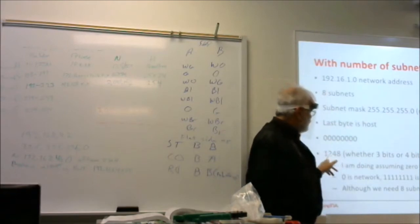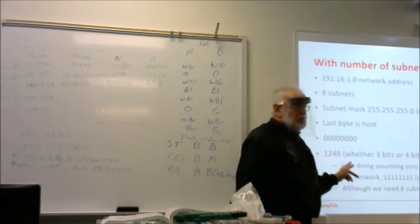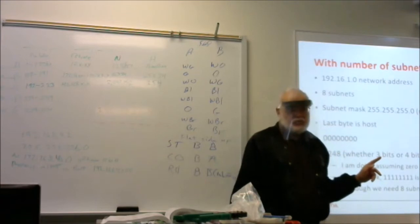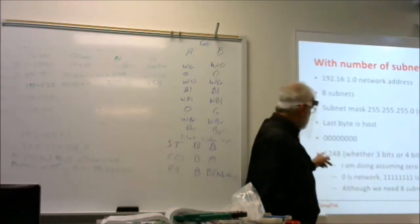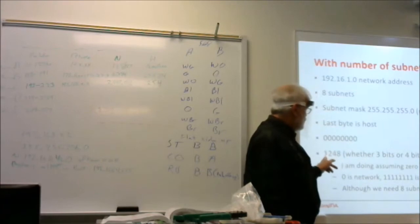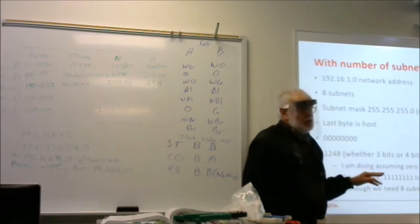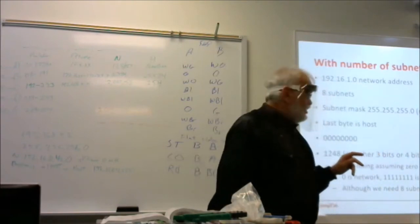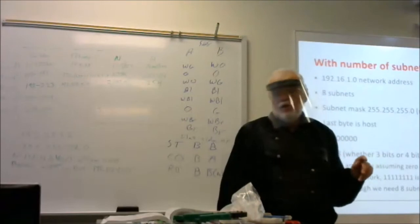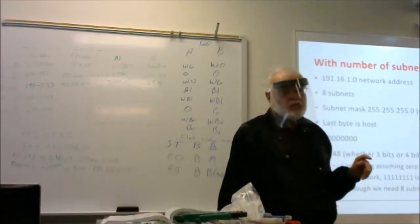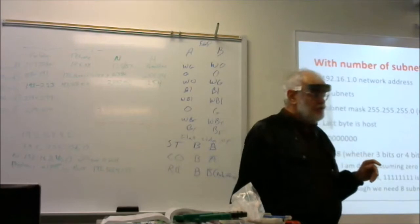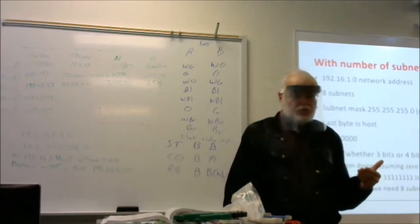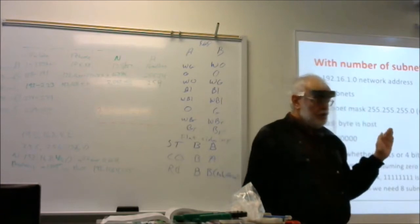We need eight subnets, so we need to go to a big enough number that's greater than or equal to the number of subnets we need. Subnet zero used to be unusable, but now it's usable — most routers will allow you to use subnet zero. The zero is usable as a network number, though host zero is not usable; that's the network address. On a test, it will typically state that subnet zero is usable.